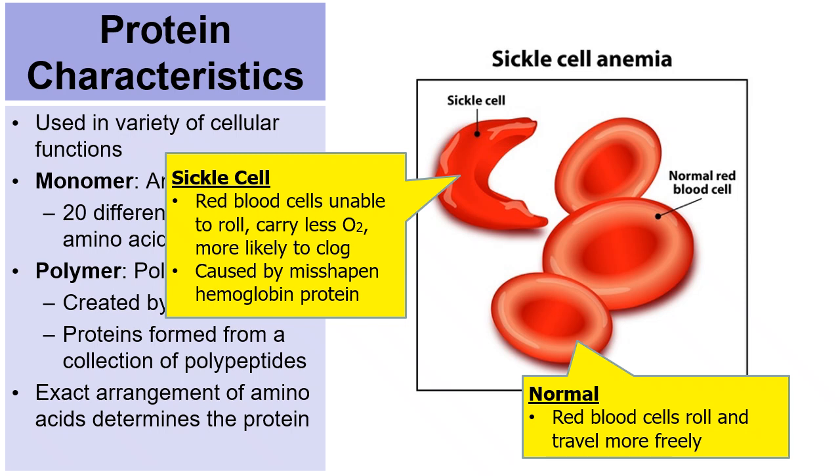And this is caused, this whole problem is caused because the person has a misshapen protein caused by the wrong amino acid in this protein called hemoglobin. So the arrangement of amino acids is quite crucial to the proper functioning and shape of the proteins.